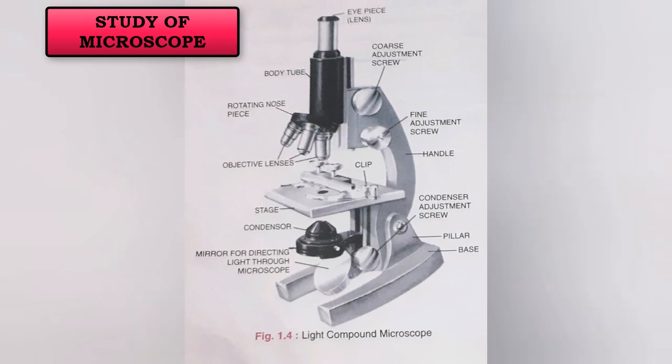Next is the objective lens. There are 2 to 4 objective lenses found in the microscope. They range in power from 5x, 10x, 45x, and 100x. The lenses are color coded — the shortest lens has the lowest power and the longest lens has the highest power. The diaphragm helps in controlling the amount of light passing through the opening of the stage.